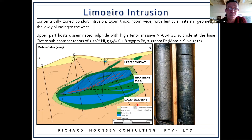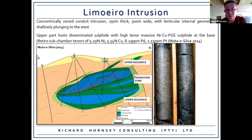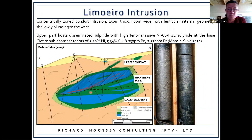This prompted further exploration and the discovery hole number four intersected 161.5 meters at 0.28% nickel with associated copper and PGMs, including 4.5 meters at 1.2% nickel, associated with four massive sulfide stringer zones. Limoeiro was defined as a concentrically zoned conduit intrusion 250 meters thick and 500 meters wide, shallowly plunging to the west. It has lenticular geometry internally with an upper sequence, transition zone, and lower sequence. The upper sequence locally cross-cuts the underlying stratigraphy and hosts disseminated sulfide with up to four layers of high-tenor massive sulfide towards the base. The main lithologies are pyroxenite and harzburgite with very little if any mafic material.